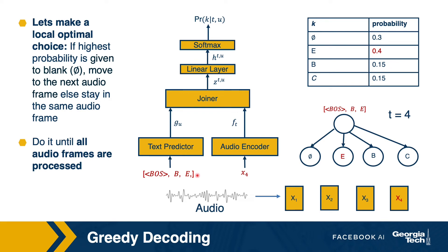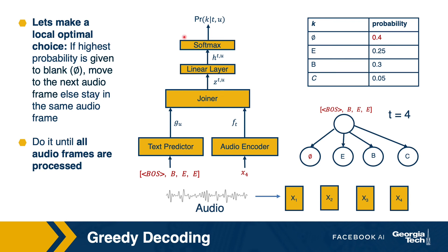Since we emitted a blank, we move to the next audio frame. In RNNT formalism, whenever we emit a blank, we go to the next audio frame. So now we are in audio frame 4, our audio features are different, and the audio embedding changes. Our text history is still the same, so the text embedding is the same. Since the audio embedding has changed, we have a different probability distribution. Let's say the highest probability is now given to letter E. Since we emitted a non-blank, our text history has now changed to beginning of sentence, B, E, and E. We have a different text embedding, but we are still in time frame 4 with the same audio embedding.